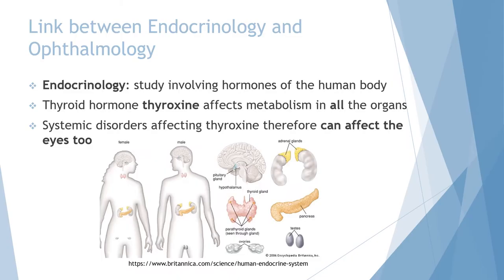Endocrinology is the study involving hormones of the human body. Hormones are released from exocrine or endocrine glands and broadly affect tissue in a systemic fashion. Thyroid hormone thyroxin specifically affects metabolism and all the organs across the body, significantly increasing the rate at which we use up our energy. Therefore, systemic disorders that arise from thyroxin production disorders can also affect the eyes.